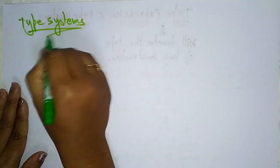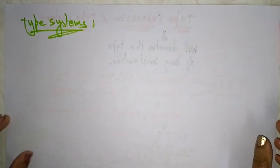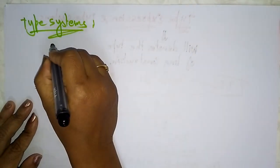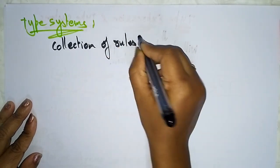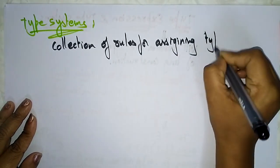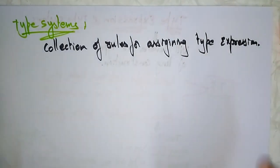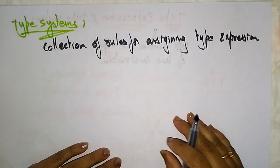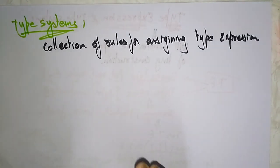Now let's look at type systems. A type system is a collection of rules for assigning type expressions. A type system provides a concise formalization of the semantic checking rules.